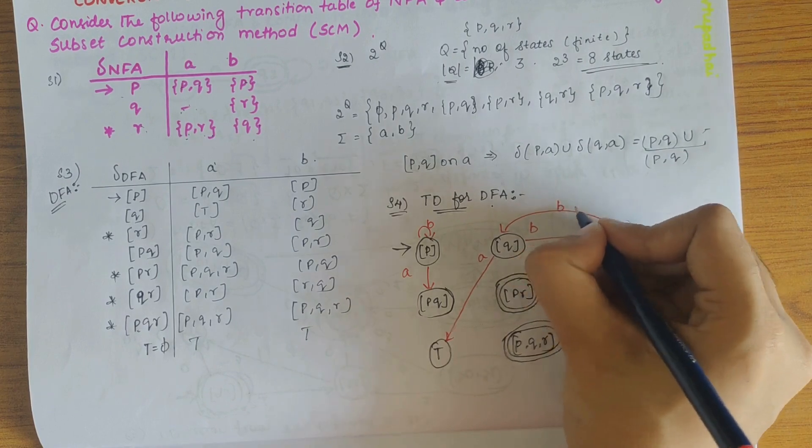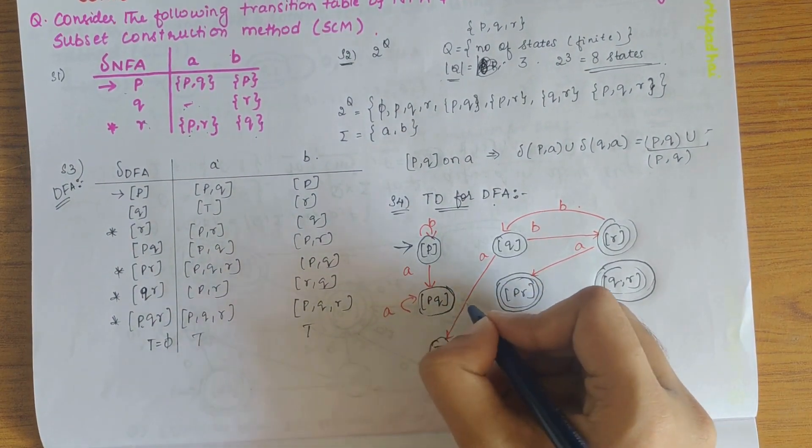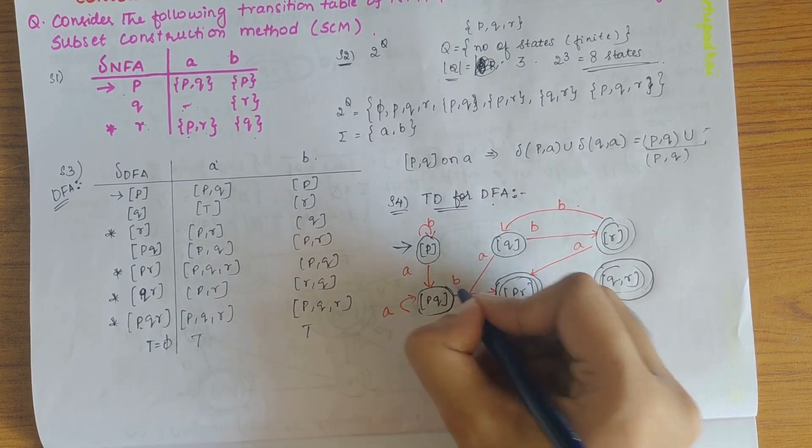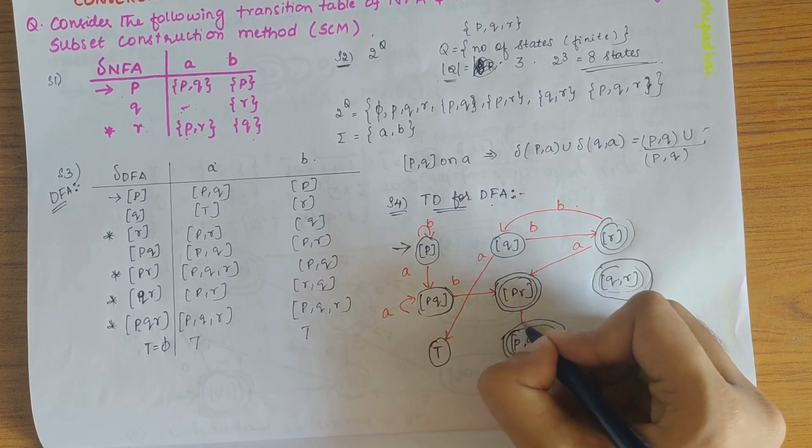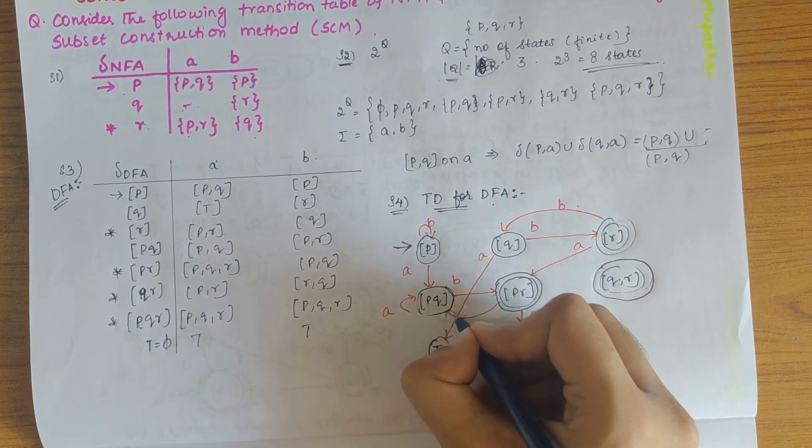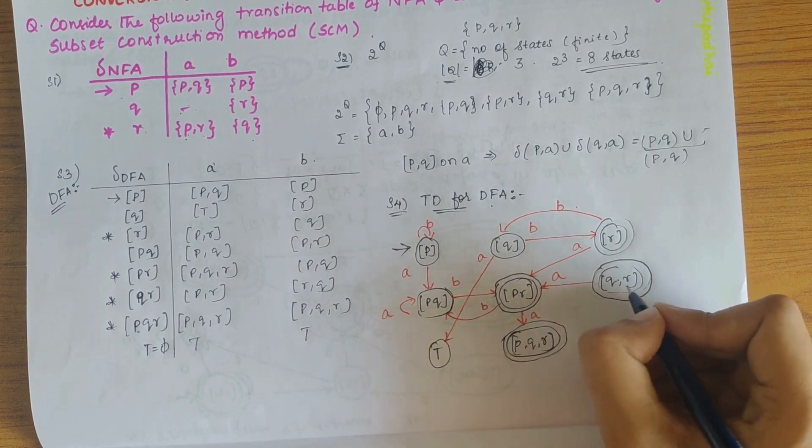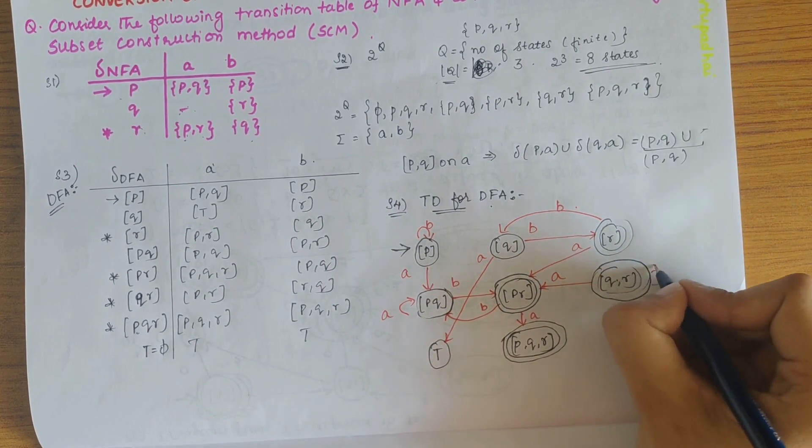pq on a gives pq itself, pq on b gives pr, pr on a gives pqr, pr on b gives pq. qr on a gives pr, qr on b gives qr itself.